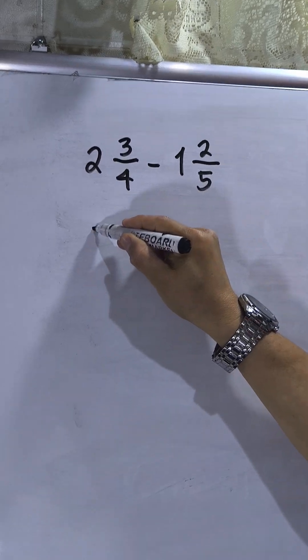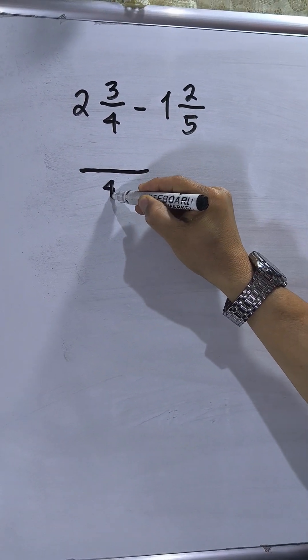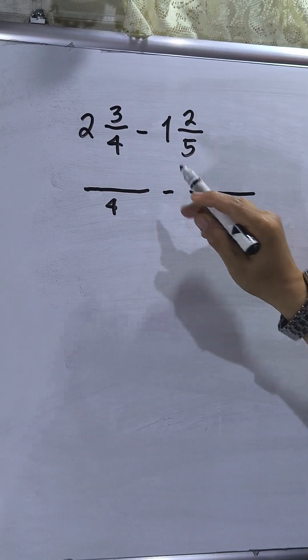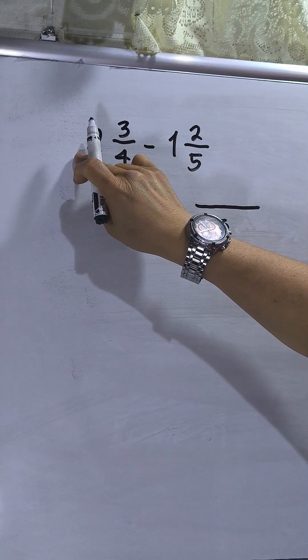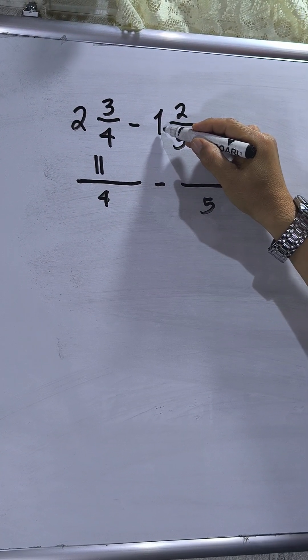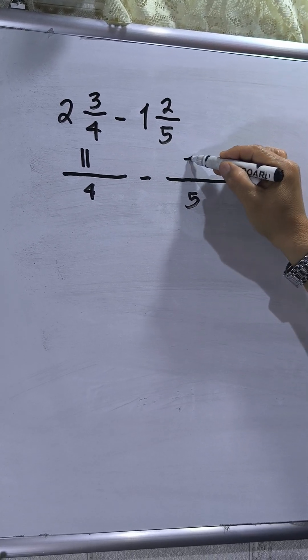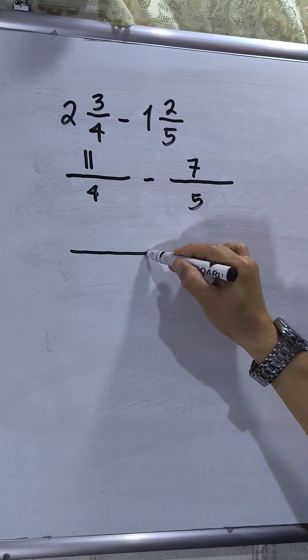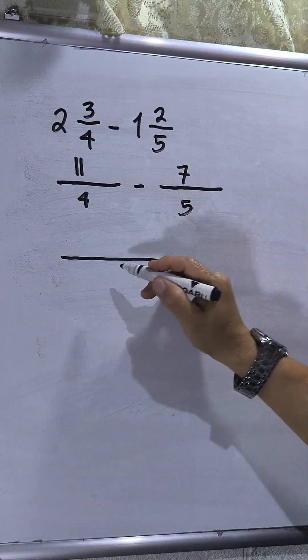First thing to do is rename these two mixed numbers. Just write the denominator first, then this will be denominator 5. So 4 times 2, that is 8, plus 3, that is 11. Then 5 times 1 is 5, plus 2, that will be 7.